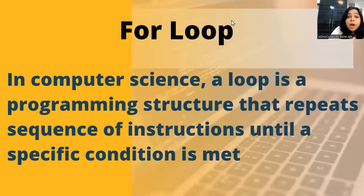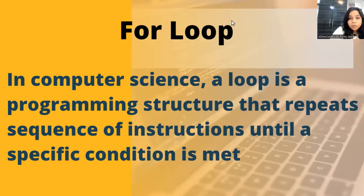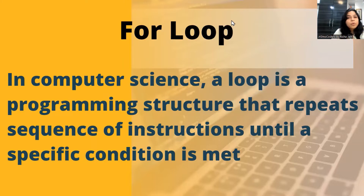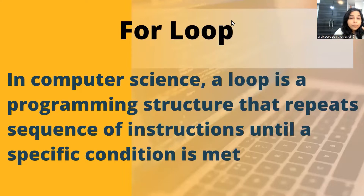A repeat loop repeats itself as many times as we ask it to repeat — 2 times, 4 times, 10 times, 20 times, 100 times, 1000 times, or as many times as we specify. But a repeat loop does not have any other condition associated with it; it will just repeat itself the number of times written. So now, what is this for loop and how is it different from the repeat loop?